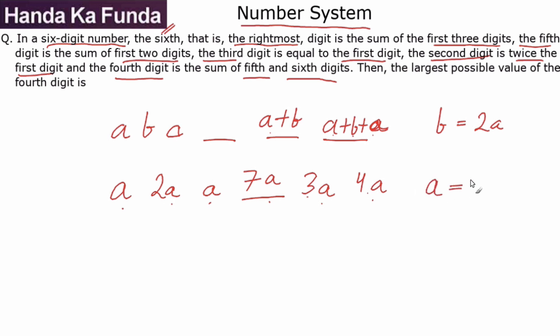Since these are all digits, the only possible value for A is 1, because if you put A as 2, you will get 7 into 2 as 14, which will not be possible. That means the number that we are looking for is 1, 2, 1, 7, 3, 4.